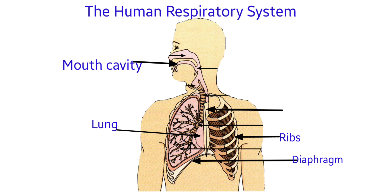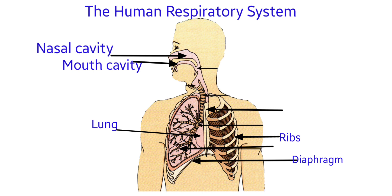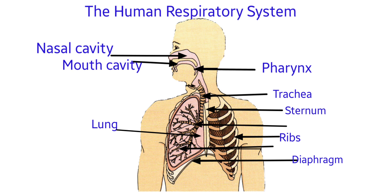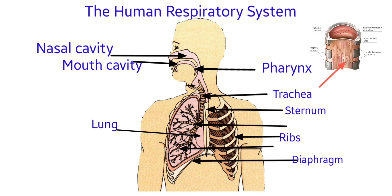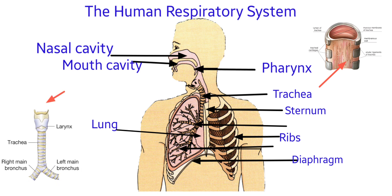Air is drawn out of the nasal passage into a channel called the pharynx. From there, air is drawn into the trachea or windpipe. The trachea is a tube running from the pharynx to the lungs. It is held permanently open by C-shaped rings of cartilage in its walls, which stops the trachea collapsing when we breathe in.